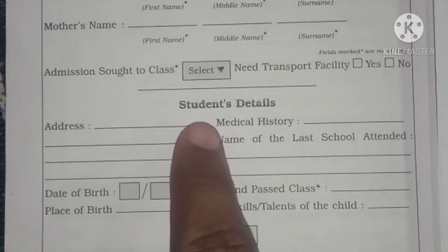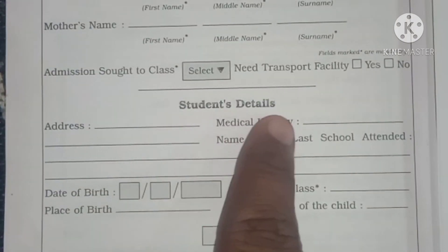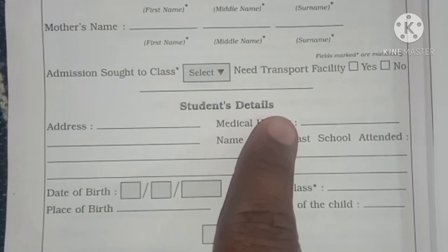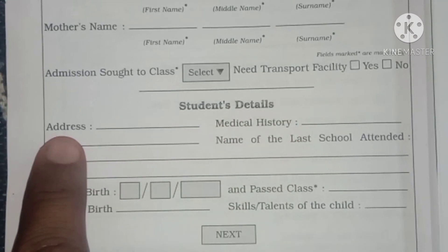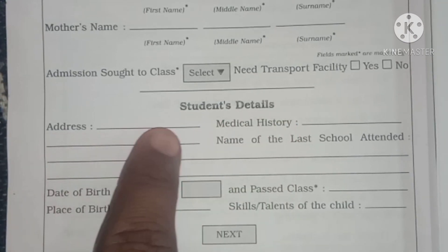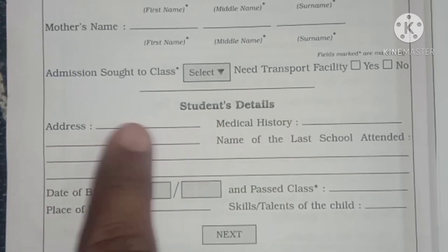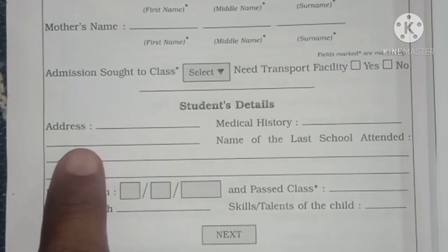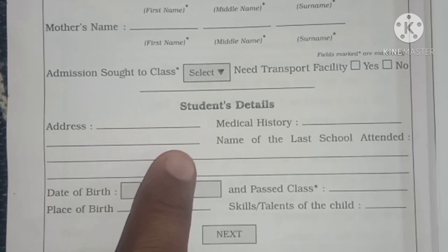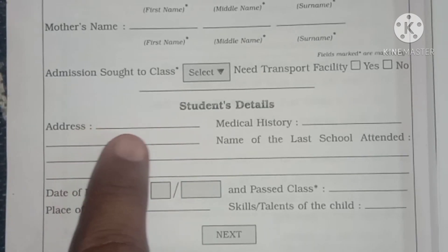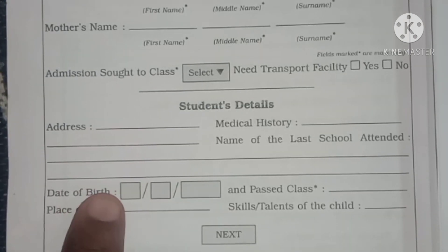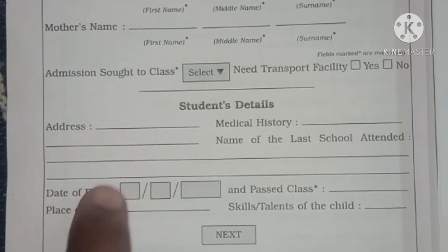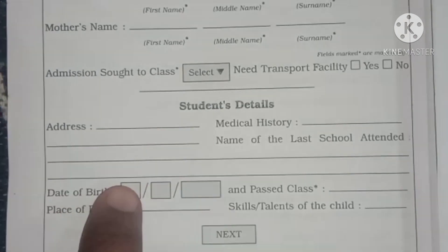Now, other details — students' details. So here you are supposed to write the address, yours address. Aaple address li hai sa hai — address in 1st, 2nd, 3rd and 4th line, our complete address.